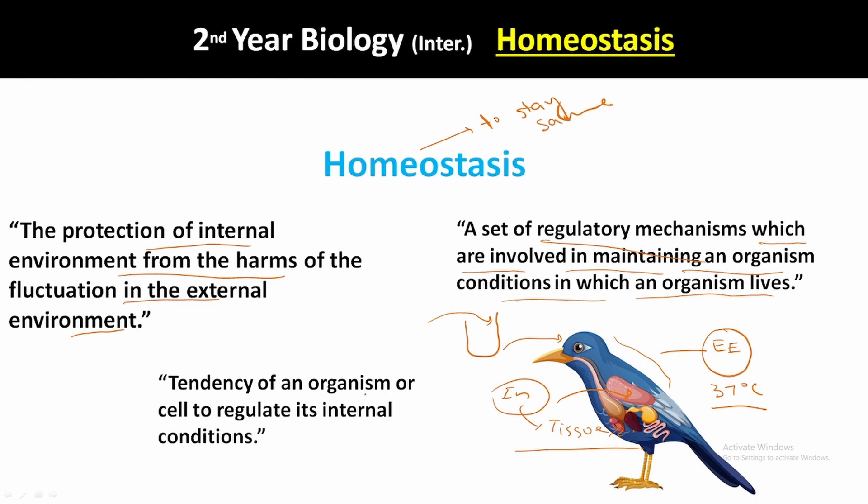A third definition: the tendency of an organism or cell to regulate its internal conditions. We use the word 'cell' because the cell is the basic unit of life. The condition starts from the cell, then tissues, then organs, then organ systems. Whatever condition the organism feels is the condition that the cell first experiences.